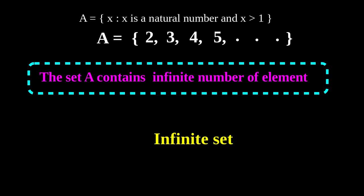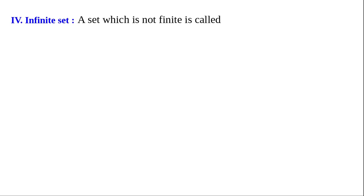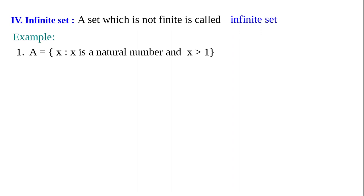Such types of sets are called infinite sets. The set which is not finite is called an infinite set, or the set which contains infinitely many elements is called the infinite set. Write into your notebook. Type 4: infinite set — a set which is not finite is called an infinite set.